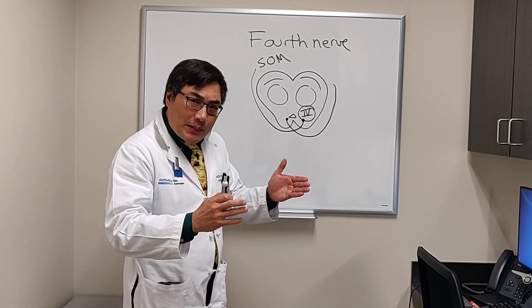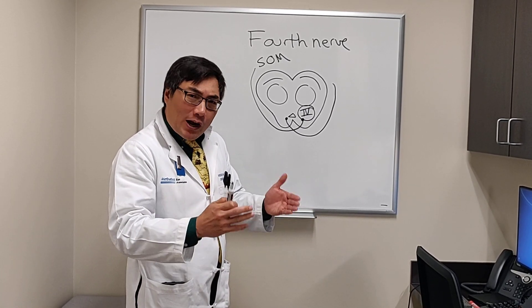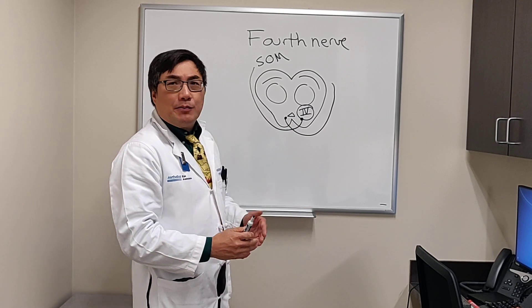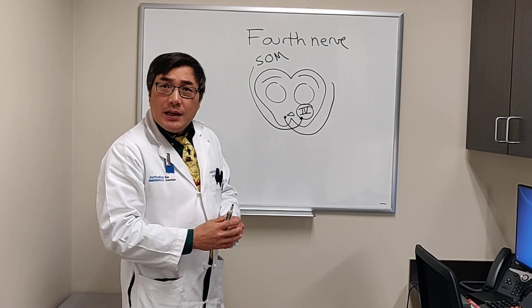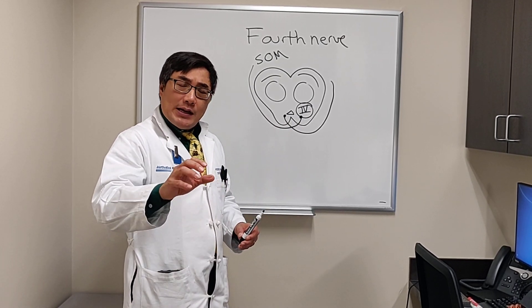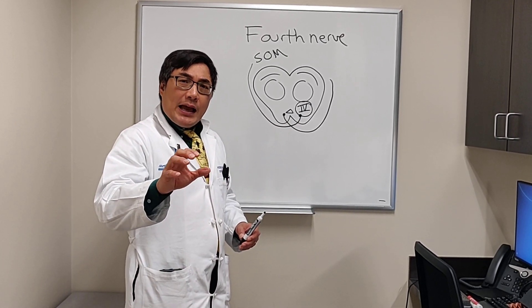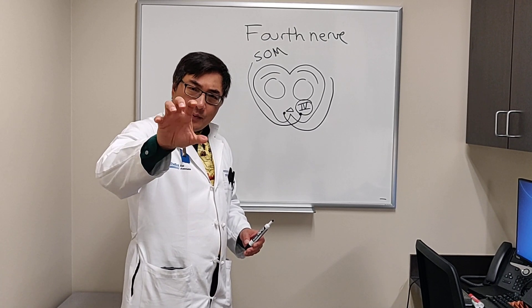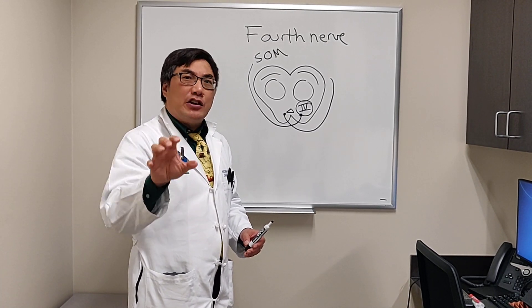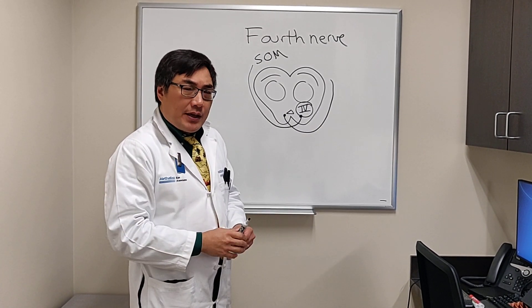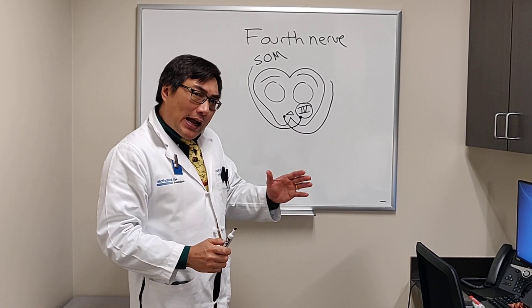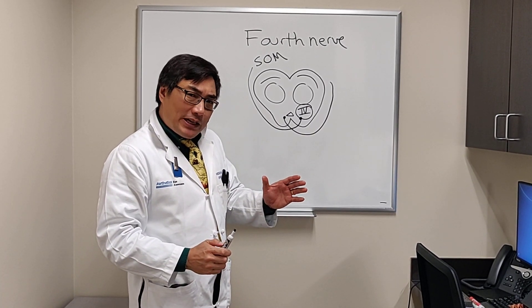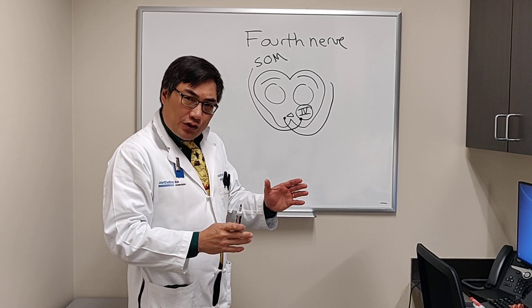That means its primary symptom is going to be diplopia. The diplopia is going to have torsion associated with it, but the patient might not notice the torsion. The primary action of the superior oblique is in torsion.